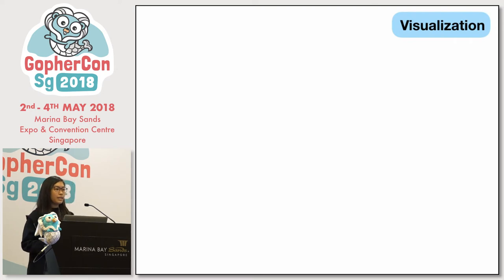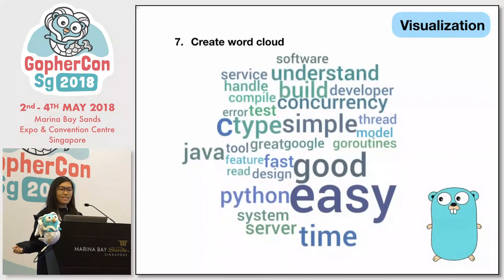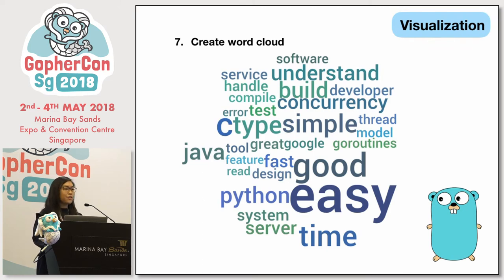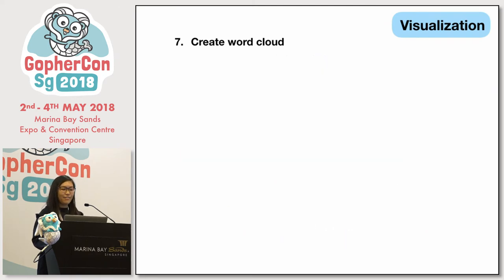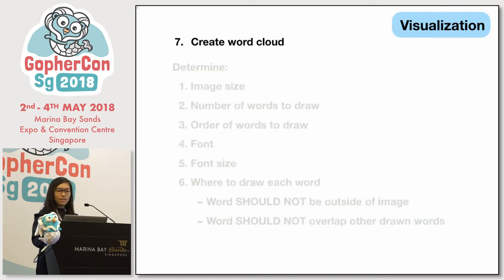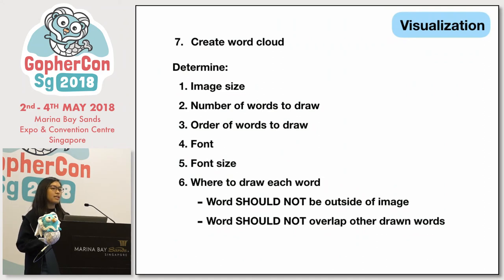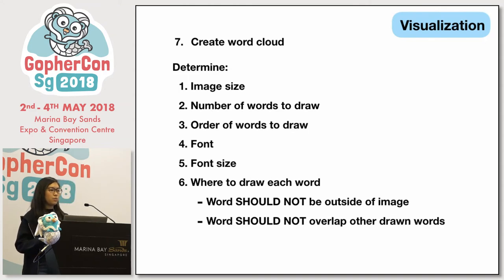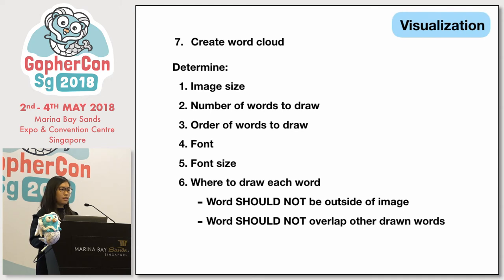With all this implemented, I had the data ready to create the word cloud, which looks like this. Creating the word cloud involved quite a lot of math. I had to determine several things: the image size, the number of words to draw, the order of words to draw, the font, the font size, and where to draw each word. On top of this, I also had to ensure that each word does not lie outside the image and does not overlap other already-drawn words, since we are drawing in sequence.